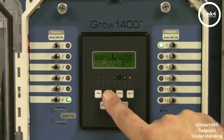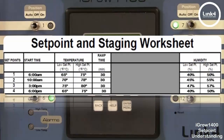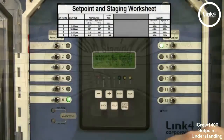You have up to four set points that you can program. The start time is when the heat and cool temperature set point temperatures are engaged. The start time is either a fixed time or it can vary daily based on the increase or decrease of day length.